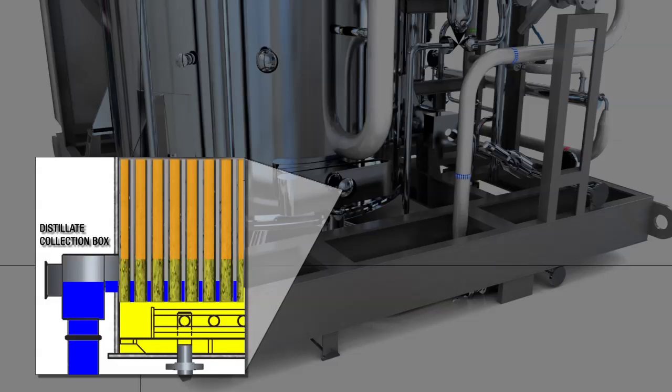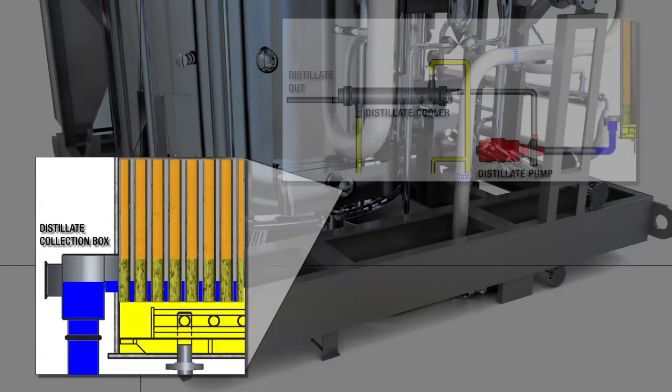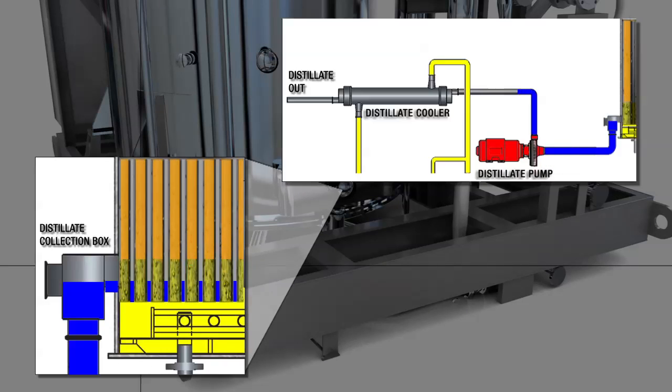Distillate drips down the tubes, is gathered in the distillate collection box, and is then pumped out by the distillate pump. The distillate is pumped through a cooler and out of the still for use.